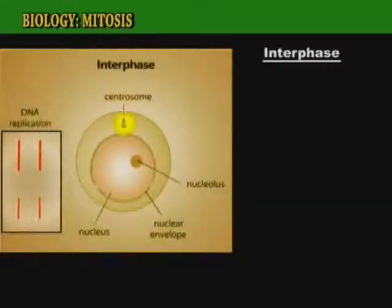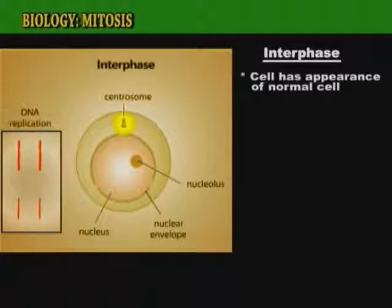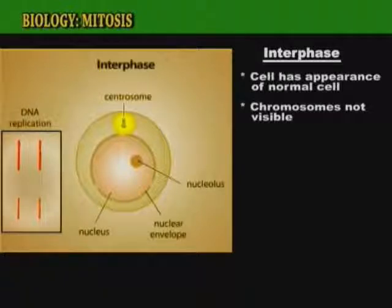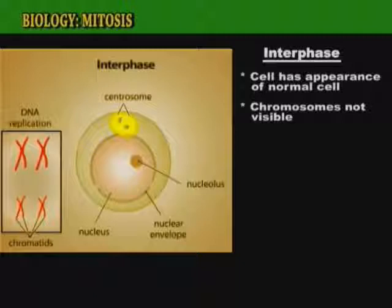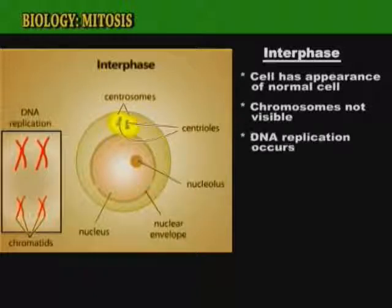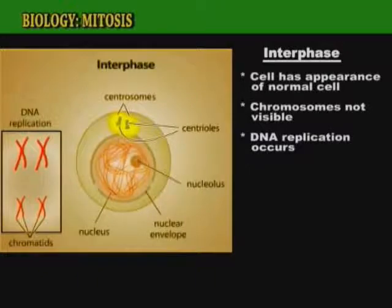The first stage of mitosis is interphase. During interphase, the cell has the appearance of a normal cell. The chromosomes are not visible — they exist as long, thin strands called chromatin threads. Chromatin is made up of 40% DNA and 60% protein. It is at this stage that the DNA starts to replicate itself.